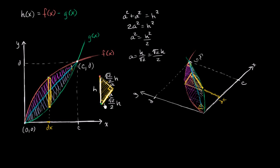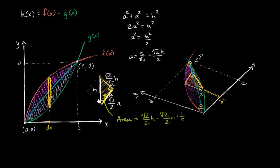So what is the area going to be? The area is base times height times one half. The base is square root of two over two times our hypotenuse, the height is square root of two over two times our hypotenuse, times one half. If we didn't include that one half, we'd be figuring out the area of the entire square. Square root of two over two times square root of two over two is one half, and then times another one half gives us one fourth h squared as the area.